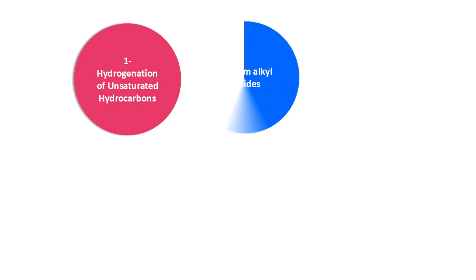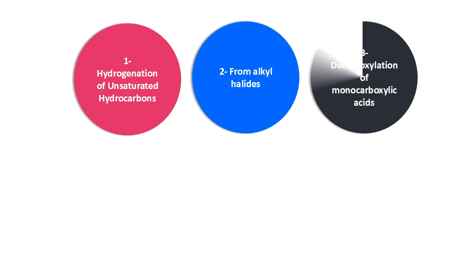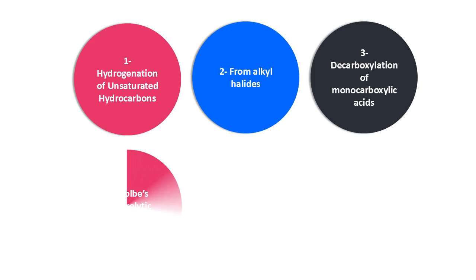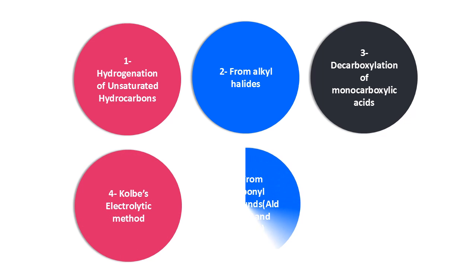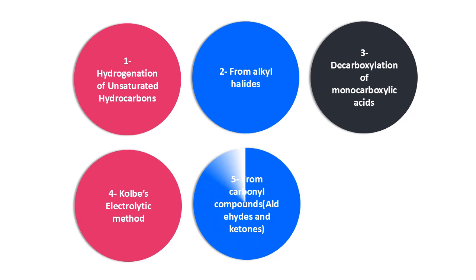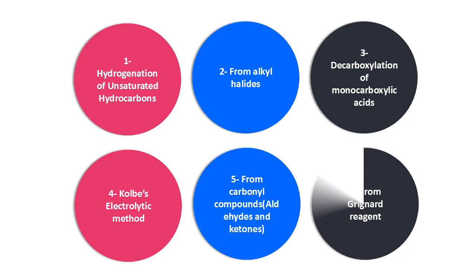Methods of preparation of alkanes include: hydrogenation of unsaturated hydrocarbons, from alkyl halides, decarboxylation of monocarboxylic acids, Kolbe's electrolytic method, from carbonyl compounds such as aldehydes and ketones, and from Grignard reagent.